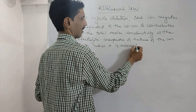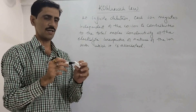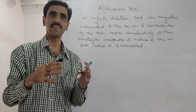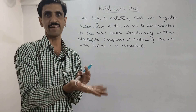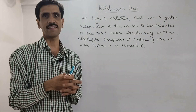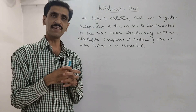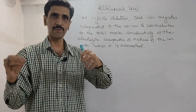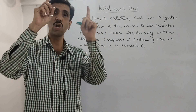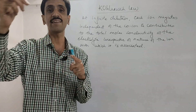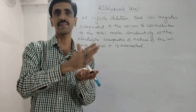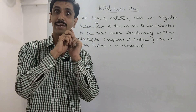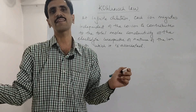Now what does this mean? An electrolyte is a substance which allows the flow of ions and current. An electrolyte is made up of ions — cations as well as anions. What this law says is every ion has an ability to migrate, that is move from one point to another, and this migration will not depend on the other ion with which it is associated. A positive ion is associated with a negative ion and vice versa.